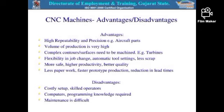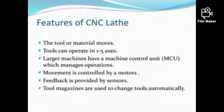CNC Machine Advantages and Disadvantages. Advantages include: high repeatability and precision — for example, aircraft parts. Volume of production is very high. Complex contour surfaces can be machined, for example turbine blades. Flexibility in job change, automatic tool setting, laser strap, more safe, higher productivity, and more.